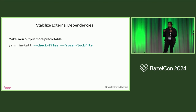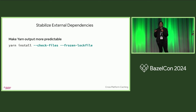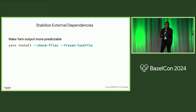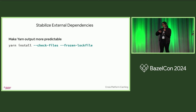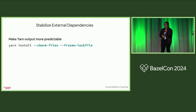The first flag is check files, and what this does is validate the package integrity — it'll make sure that the files on disk actually match what is expected for that package. This comes out of the box in Yarn too; we're using an older version.